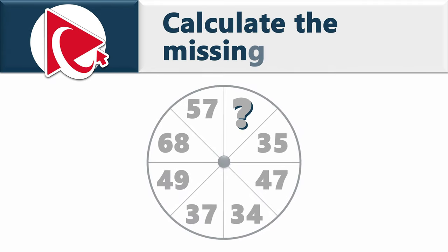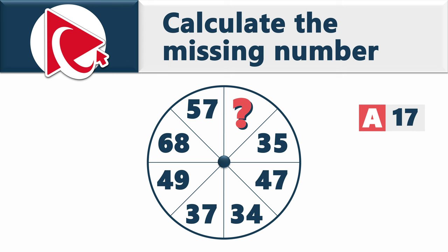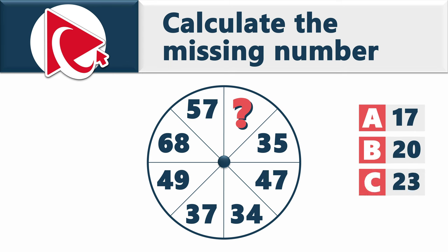You are presented with a circle broken into 8 equal parts, each section containing a number. The numbers are 35, 47, 34, 37, 49, 68, 57, and the missing number. You need to select the answer from: Choice A: 17, Choice B: 20, Choice C: 23, and Choice D: 25.